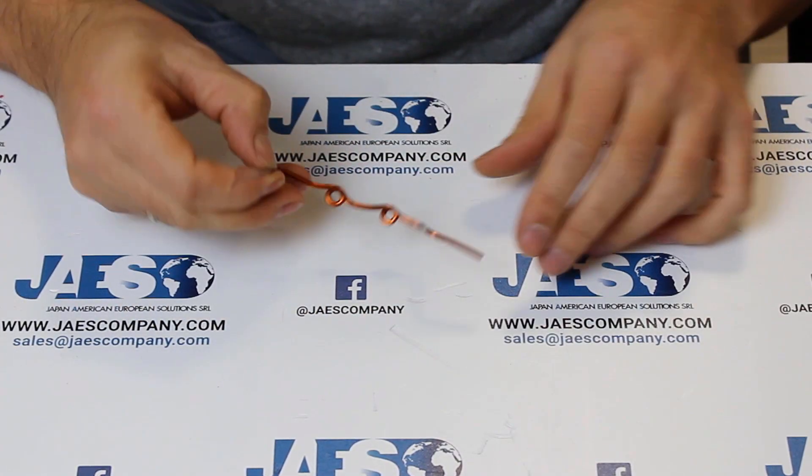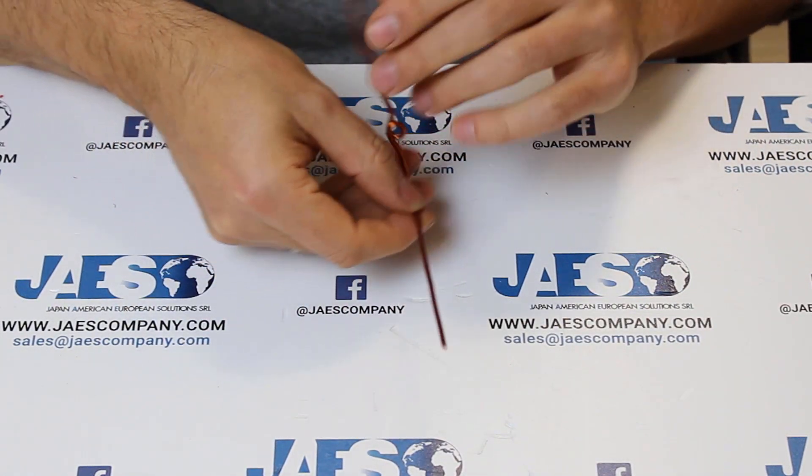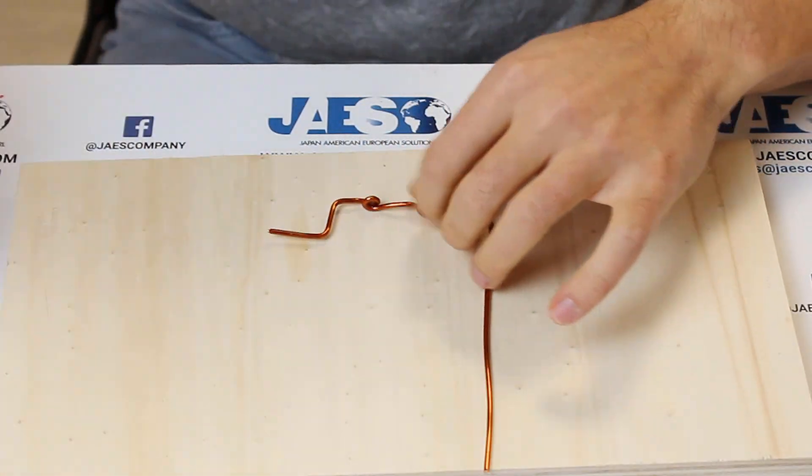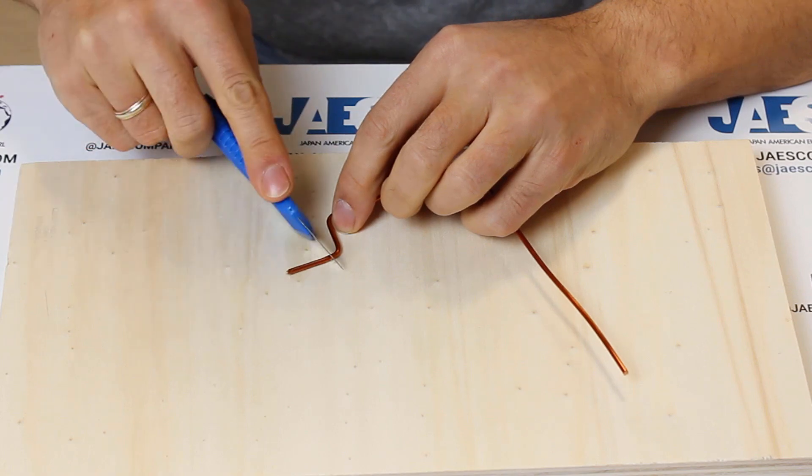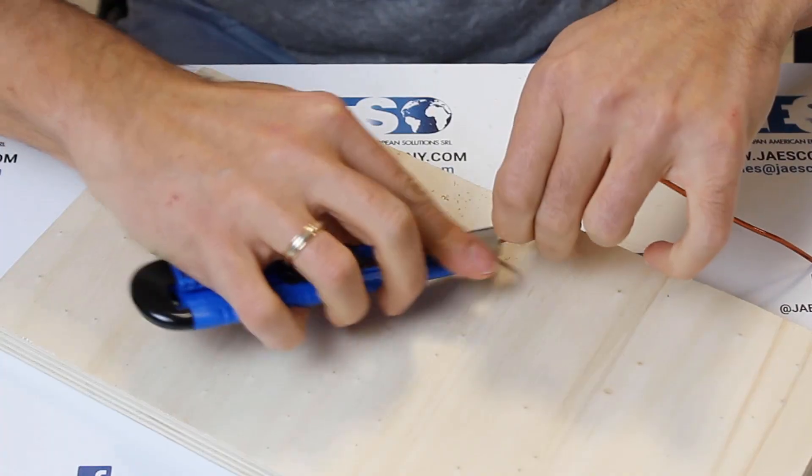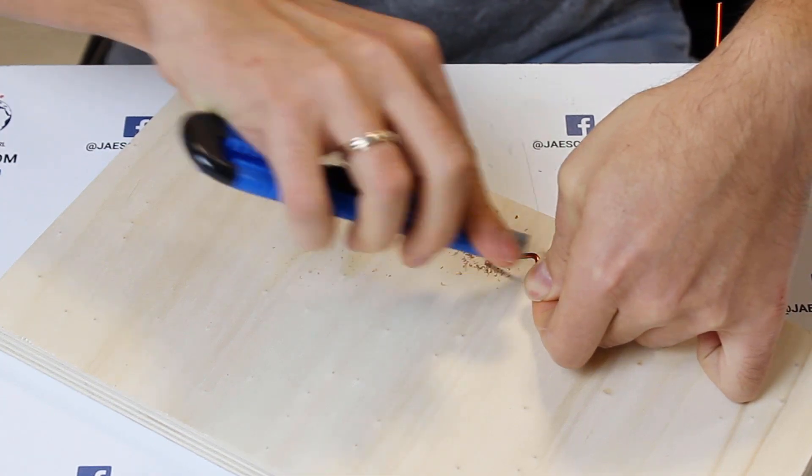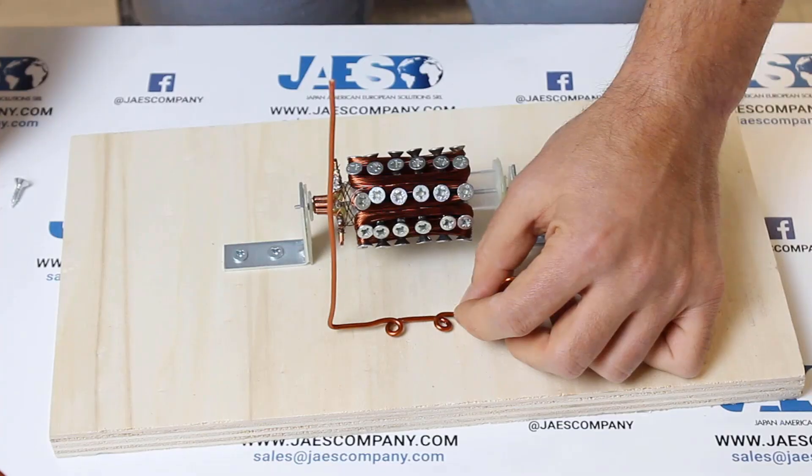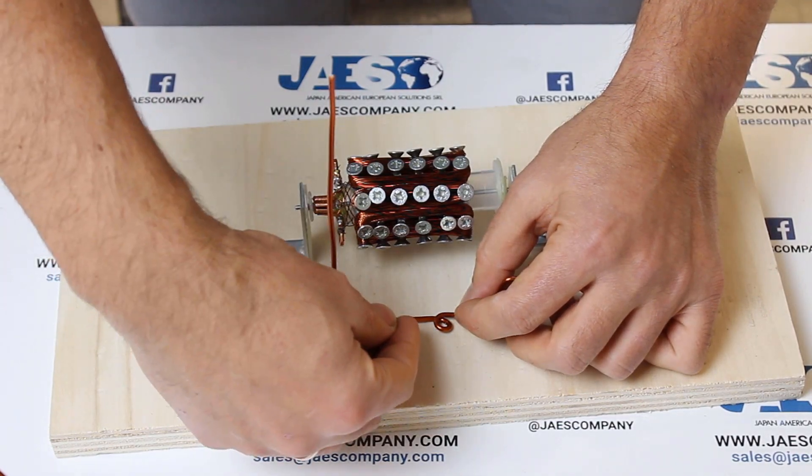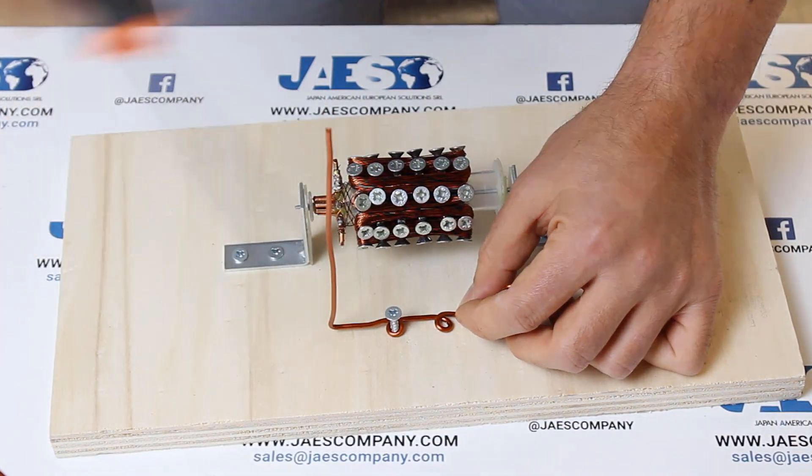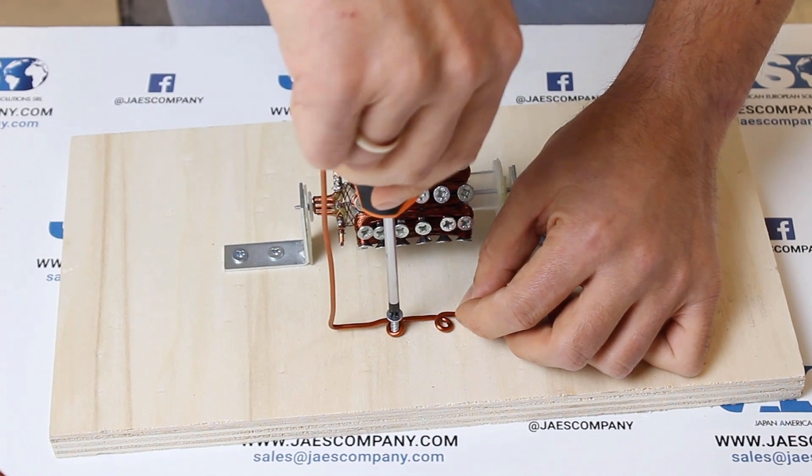We previously shaped this 1.5 mm copper wire in this way to create what can be considered the brushes of our DC motor, which are responsible for the transmission of the power to the copper angle brackets and consequently to the copper coils. Okay, now we can fix our brushes in this way. We have to follow this procedure.